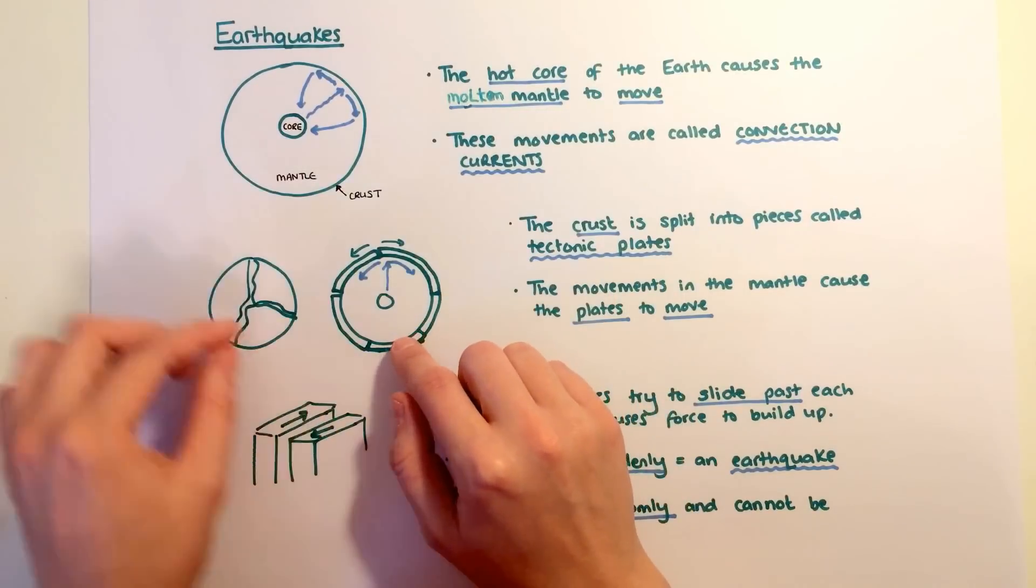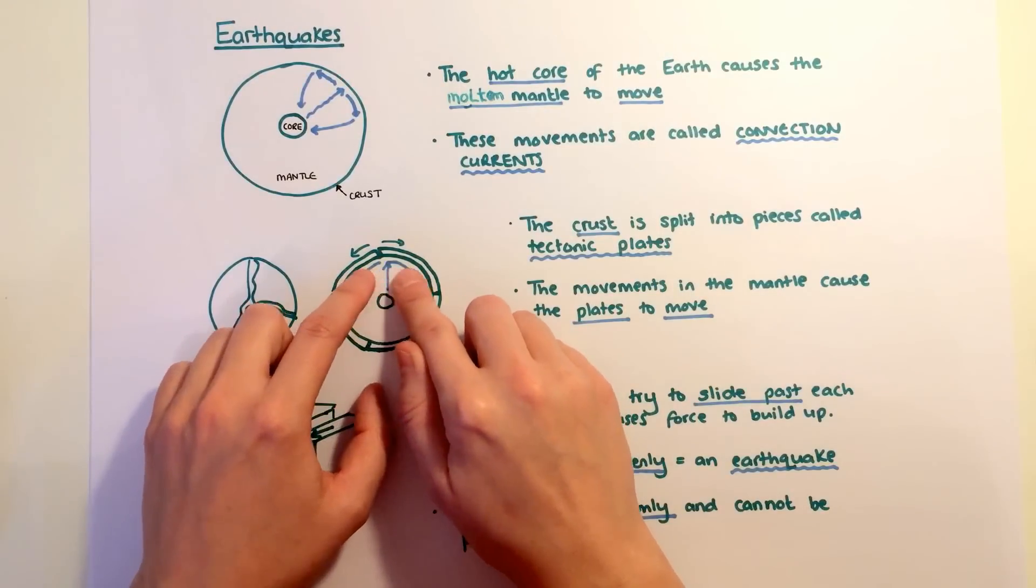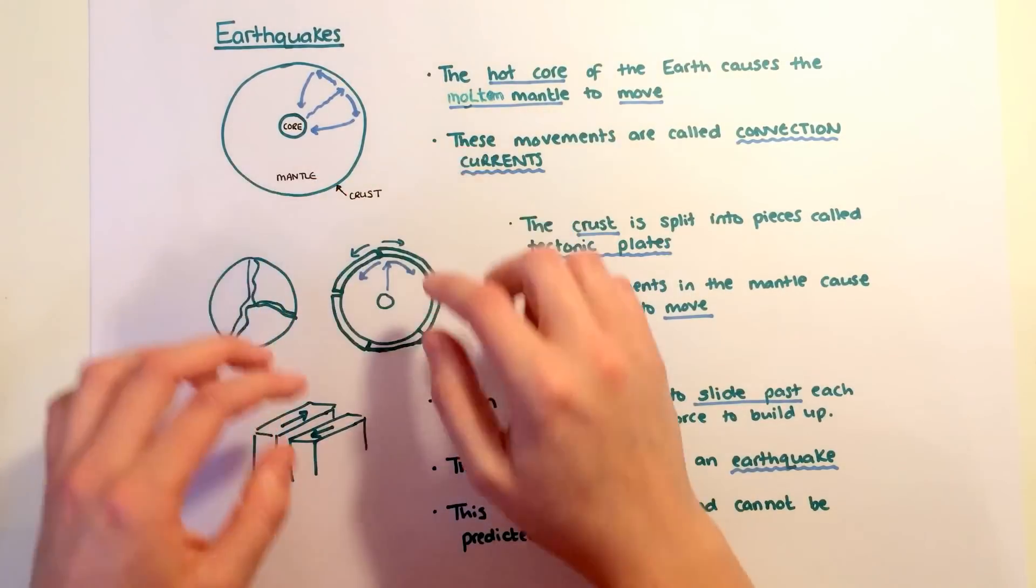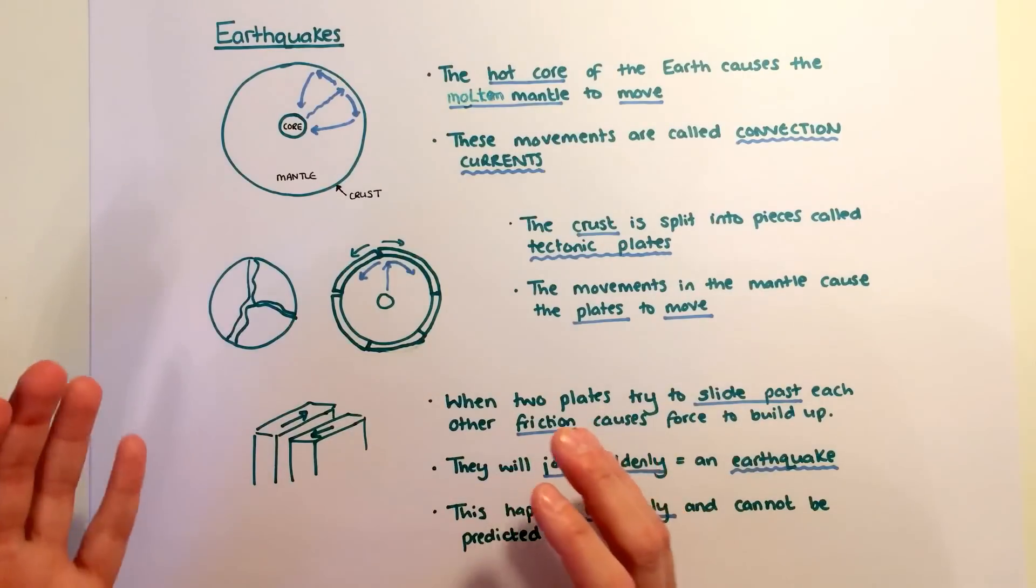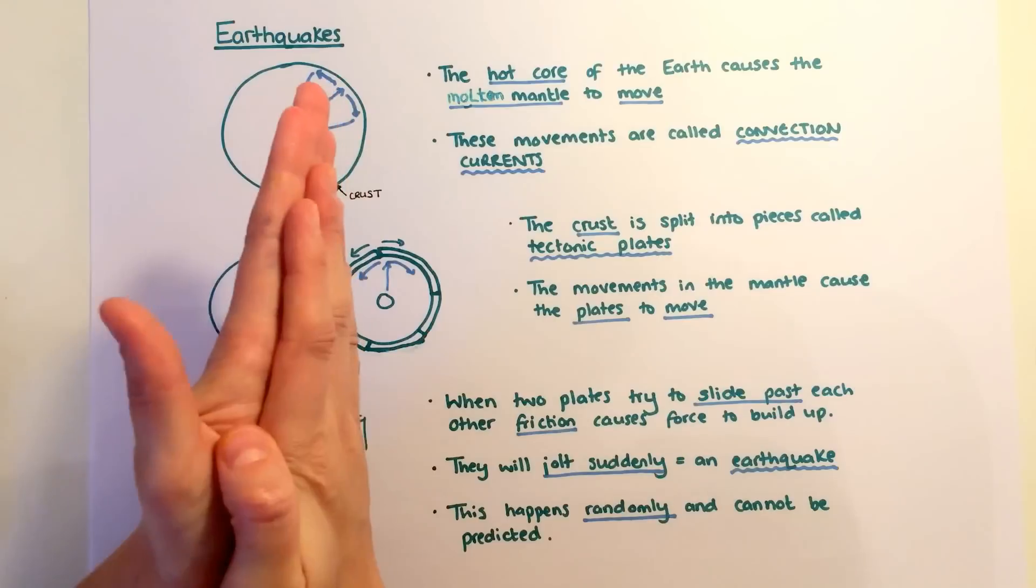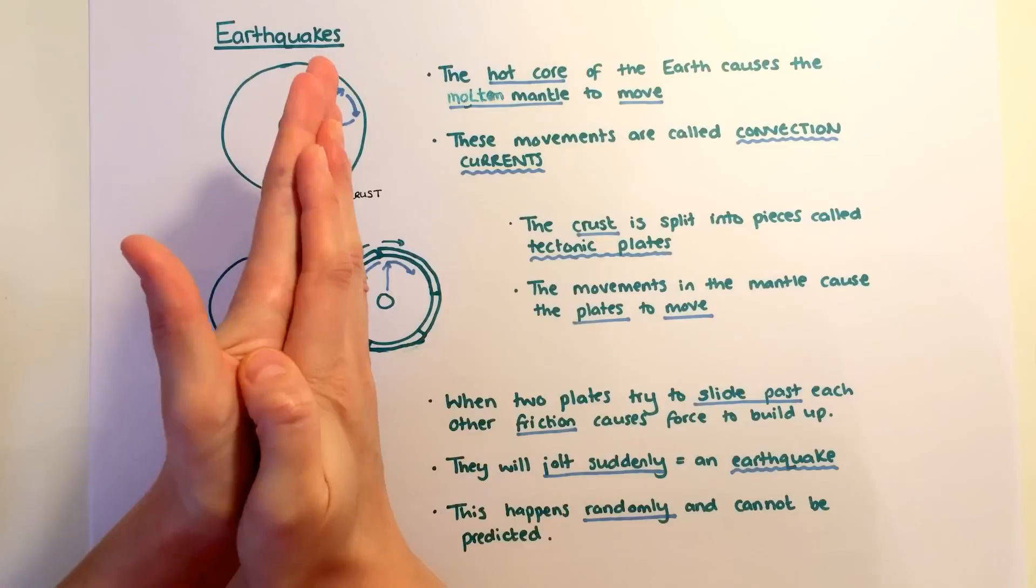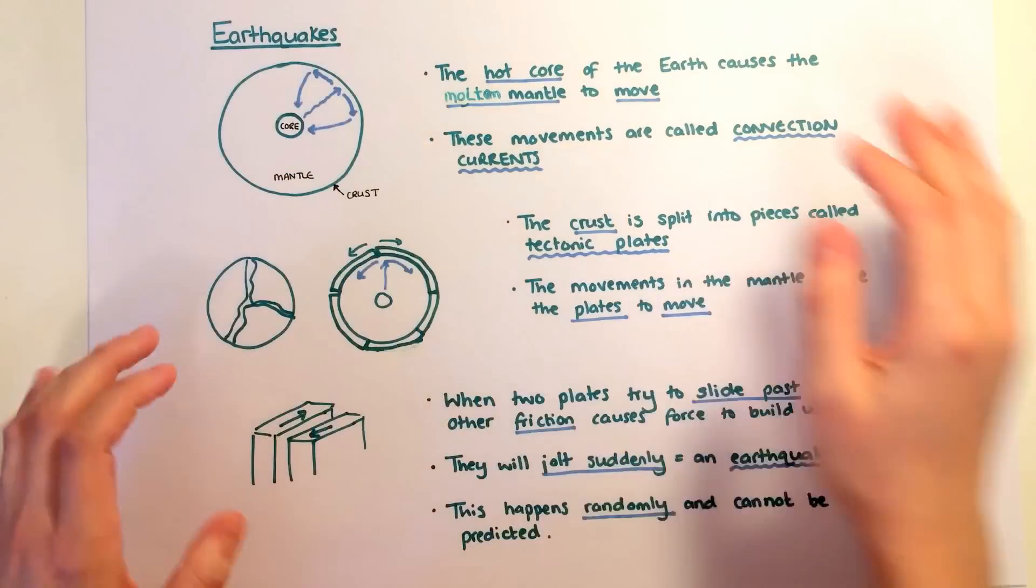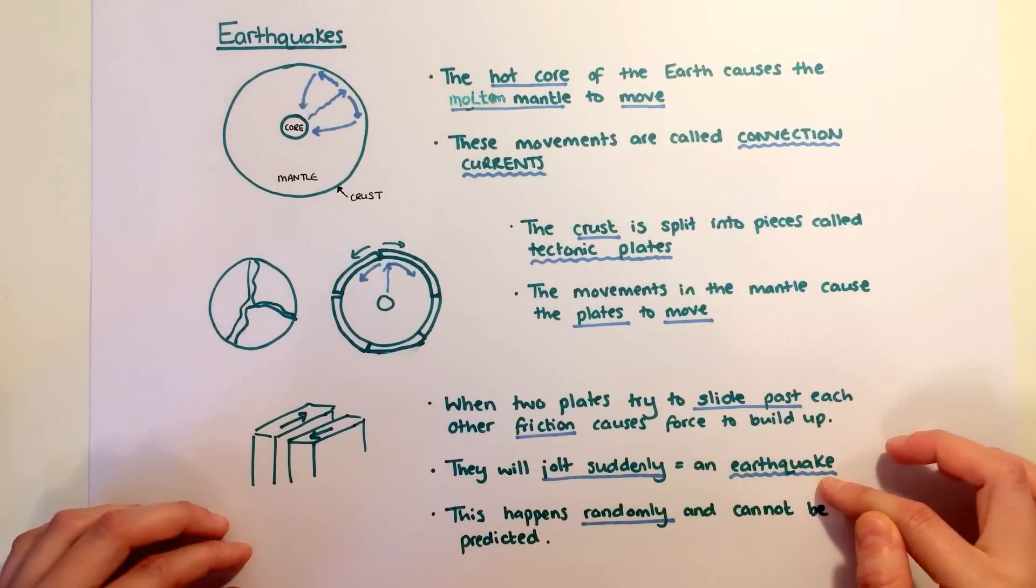The crust that sits on top of the mantle is split into large pieces called tectonic plates, and as the mantle moves, it causes the plates to move as well. When two plates try to slide past each other, there's a lot of friction, so force builds up and will suddenly move and jolt. That sudden jolt of movement is called an earthquake.